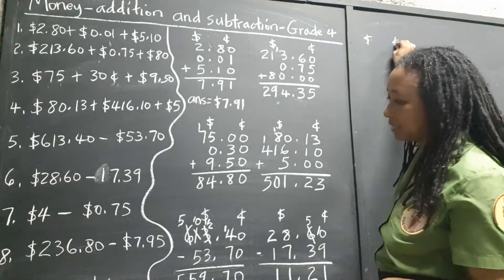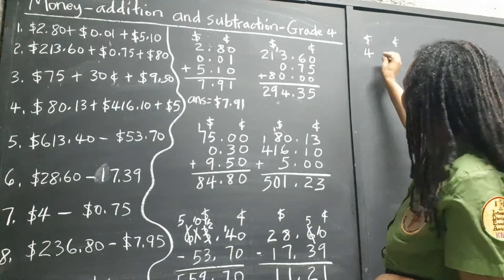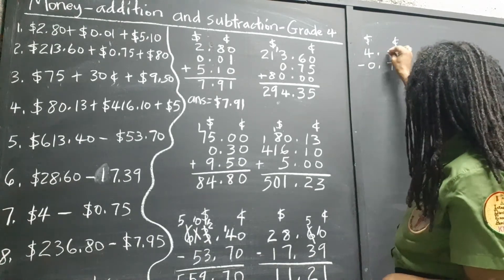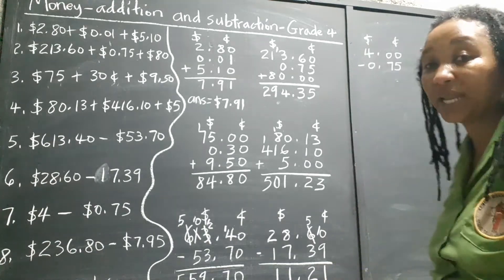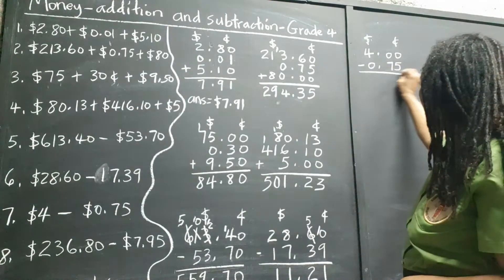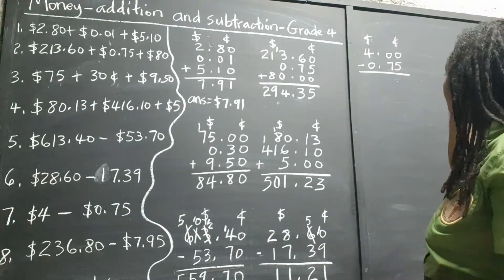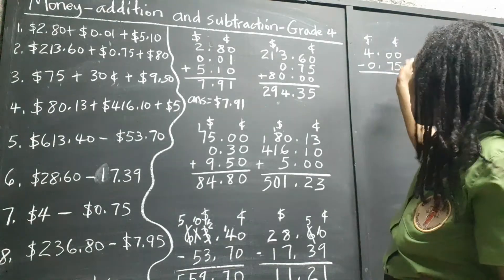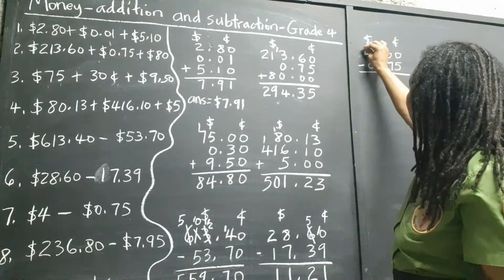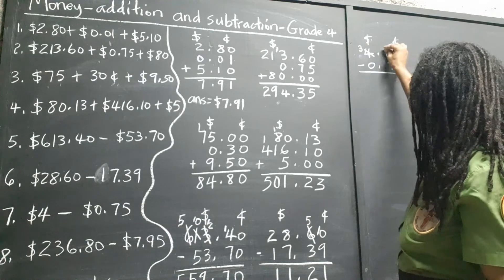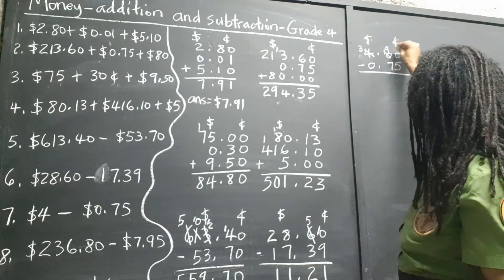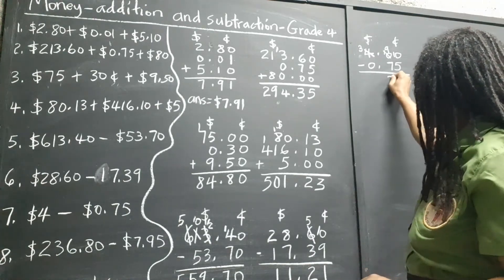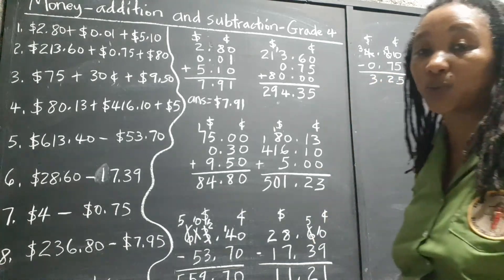Dollars, cents, $4. And we're taking away $0.75. So we know we have to fill in our places with zeros. And now we subtract. So we're going to have to go, we have no cents at all at the top and we need to take away 75 cents. We're going to have to go to the dollars to get a whole dollar and take it over here. So that's 5 and 2. 25 cents. $3.25.